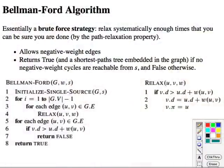The Bellman-Ford algorithm is very simple conceptually. It takes a brute force strategy. It relaxes all the edges systematically enough times that by the path relaxation property, we can be sure we're done. For i equals 1 to |V| minus 1, this means do it as many times as the longest possible path in the graph, because the longest path you can have would be V minus 1 edges.